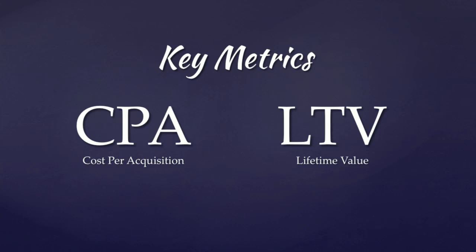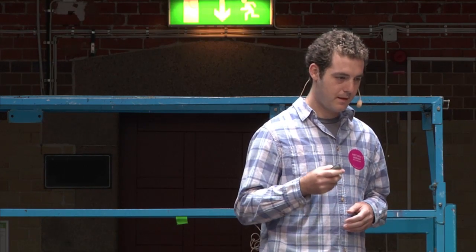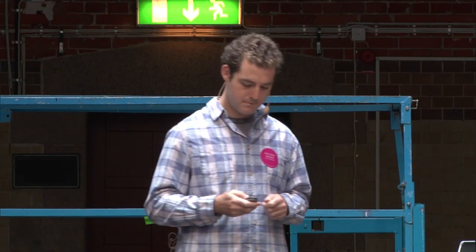There are two key metrics with distribution hacking. CPA — cost per acquisition: how much does it cost to acquire one new customer? And LTV — lifetime value: how much is that one new customer worth to our business? Our ultimate goal is to be cost effective when acquiring new users, so the goal is to have a CPA that is less than our LTV — our acquisition cost is less than the value of that customer to our business. And we need to be able to do this at scale, because acquiring many users cost effectively is what we can actually build a business upon.